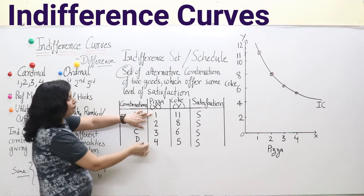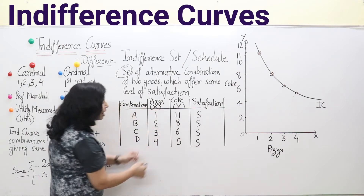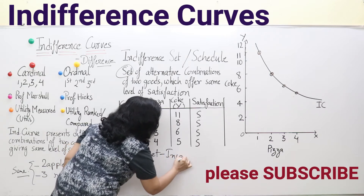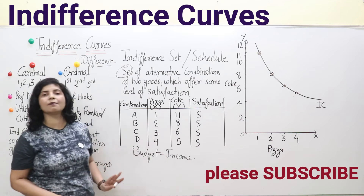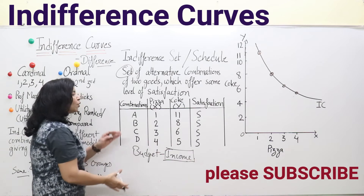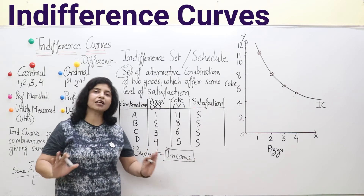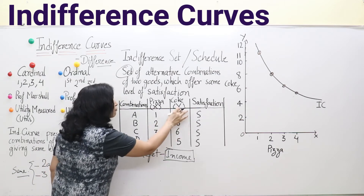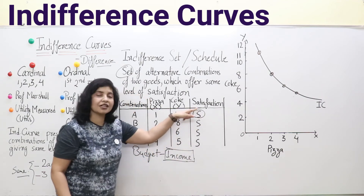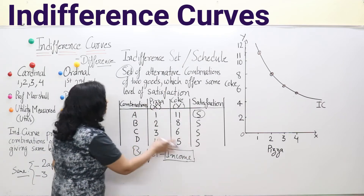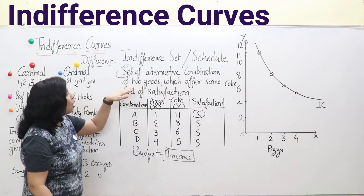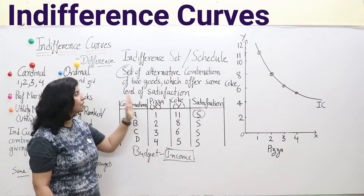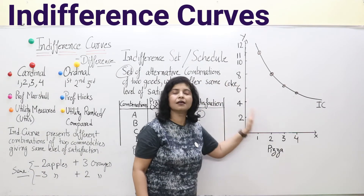As consumption of pizza increases, consumption of coke decreases. This is because of the budget constraint — income remains constant, and we also assume price remains constant. So to increase consumption of one commodity, we have to forgo consumption of another. We can have more pizza and less coke, or more coke and less pizza, but satisfaction S remains constant throughout this schedule — this is the indifference schedule.